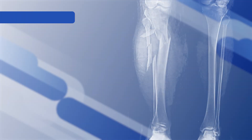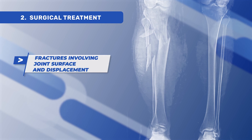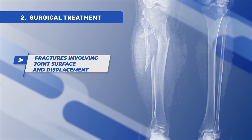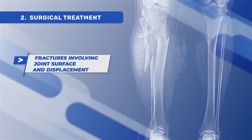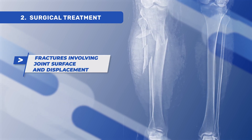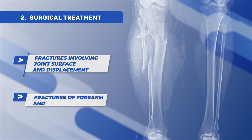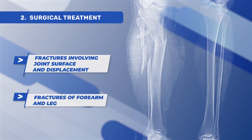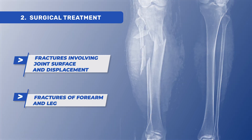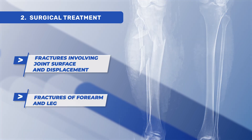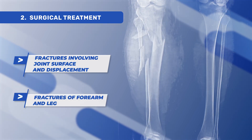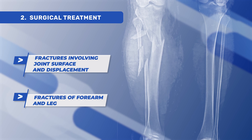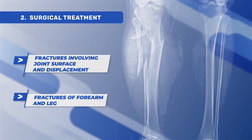For example, if the fracture involves the joint surface and is displaced, or even a fracture in the forearm, femur, or tibia that is displaced, surgery is needed.